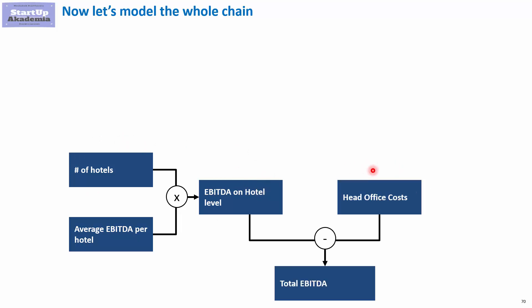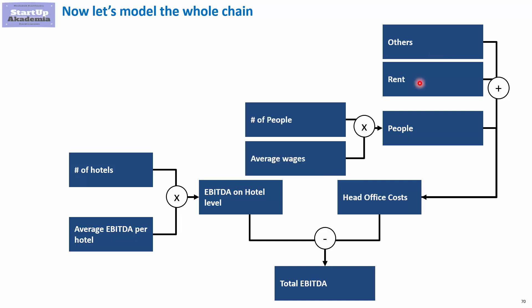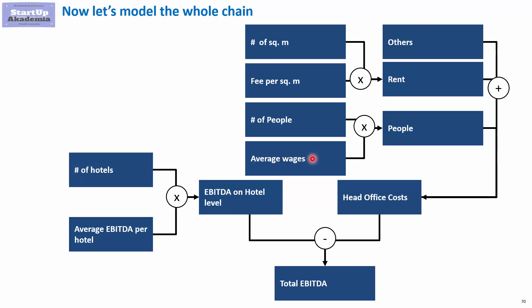We then deduct the head office costs. The simplest approach is to look at rent — one of the biggest costs — and group people and other costs together. People costs are modeled by number of people and average wage, and rent is again the number of square meters multiplied by a cost per square meter.